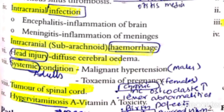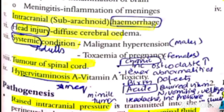The seventh cause is systemic conditions. The patient may have malignant hypertension — overall body circulation hypertension, which is malignant hypertension, mostly presenting in males. The second systemic cause is toxemia of pregnancy, obviously in females — during pregnancy they have hypertension, called eclampsia, which leads to papilledema. There are also tumors of the spinal cord, which link to the cerebral spinal fluid and cause raised pressure.